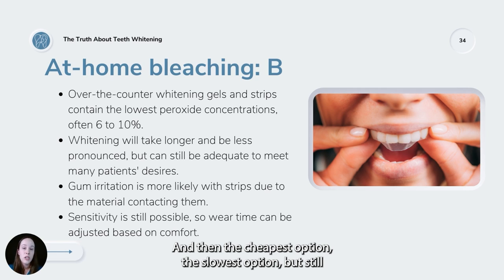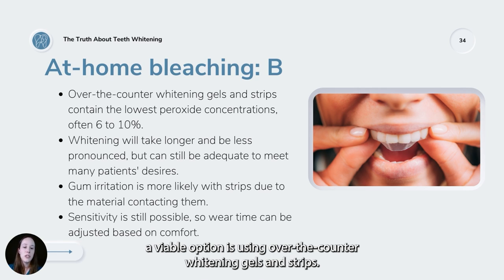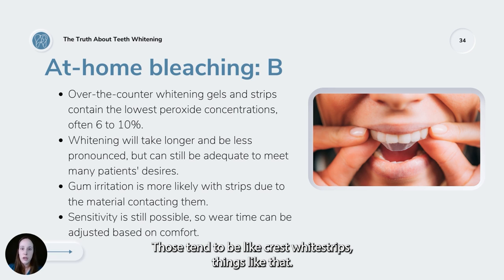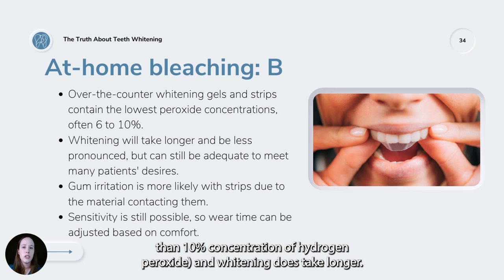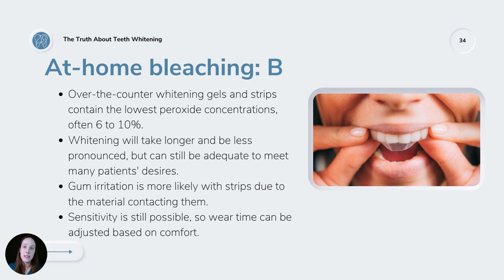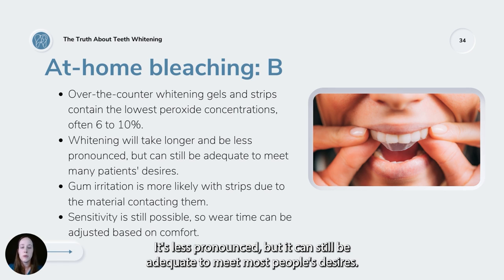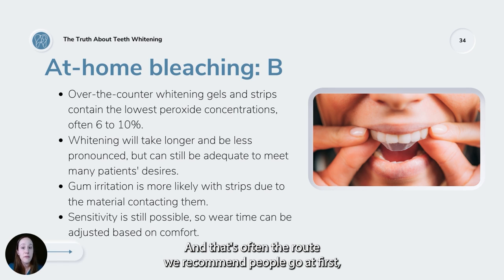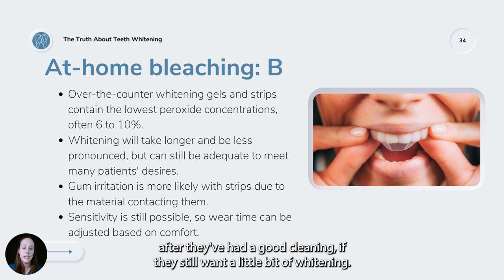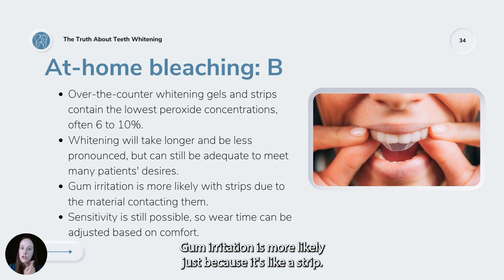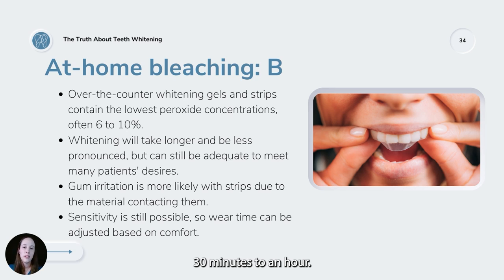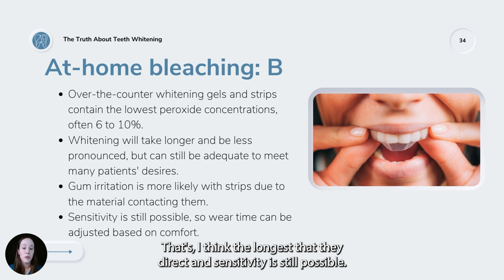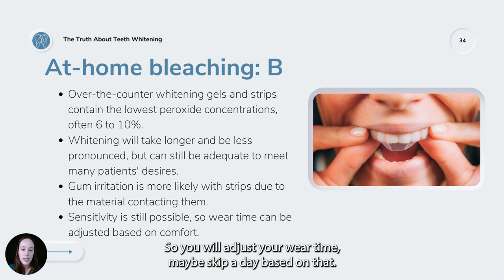The cheapest and slowest but still viable option is over-the-counter whitening gels and strips, like Crest White Strips, at around 5 to 10% hydrogen peroxide concentration. Whitening takes longer and is less pronounced, but it can still meet most people's desires. This is often the route recommended first after a good cleaning. Gum irritation is more likely because the strip isn't shaped to your teeth. Wear time is typically no more than 30 minutes to an hour. Sensitivity is still possible — you can adjust your wear time or skip a day based on that.